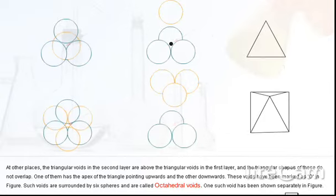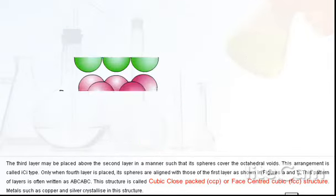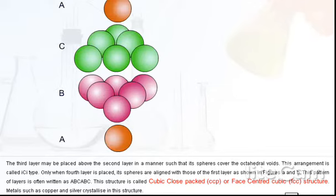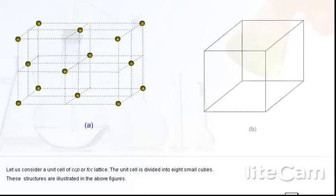Close-packing in three dimensions. Let us take a two-dimensional hexagonal close-packed layer A, tetrahedral and octahedral, placing third layer, covering octahedral voids, locating tetrahedral voids. Let us consider a unit cell of CCP or FCC lattice. The unit cell is divided into eight small cubes. These structures are illustrated in the above figures.